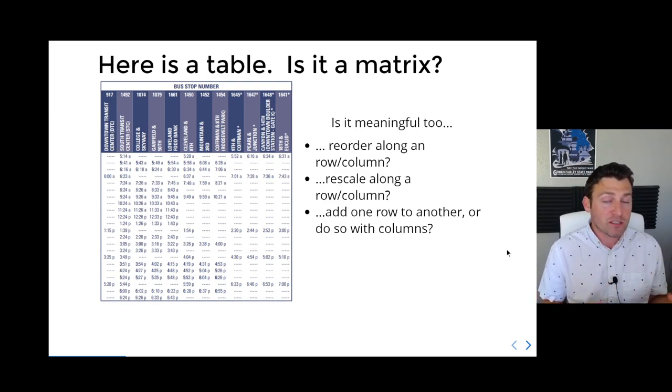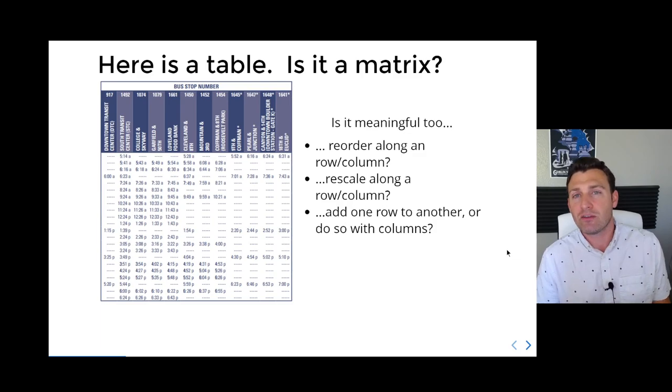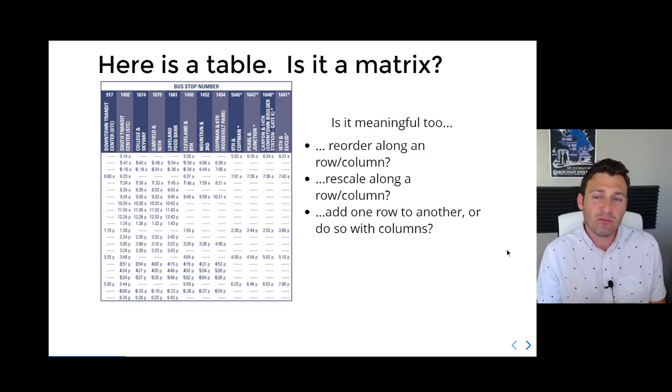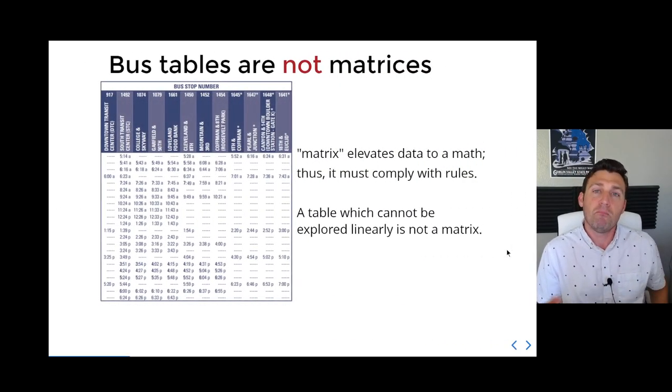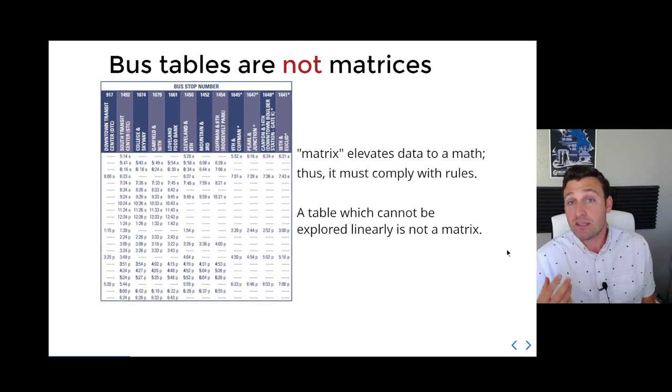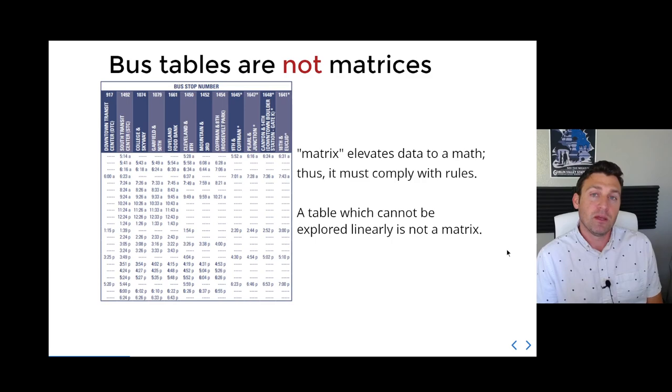Why would you ever rescale the time of day? Why would you rescale one particular station? These are not relevant. Likewise, we never take linear combinations of any two rows or columns. This type of data, while encodable as a matrix, is resistant to any kind of linear algebra. It therefore really ought not be called a matrix. When we say something is a matrix, we're elevating it to the understanding that linear algebra is a relevant tool, and it clearly isn't in this example.